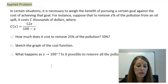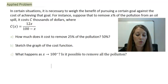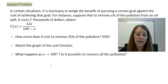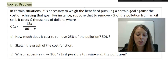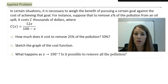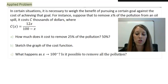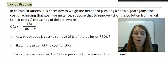In certain situations, it is necessary to weigh the benefit of pursuing a certain goal against the cost of achieving that goal. Suppose to remove X percent of the pollution from an oil spill, it costs C thousands of dollars, given by the function 12X over 100 minus X. This is a three-part question: how much does it cost to remove 25% and 50% of the pollution; sketch a graph of the cost function; and what happens as X approaches 100 from the left? I suggest you pause the video and try these on your own.